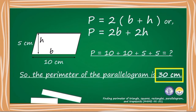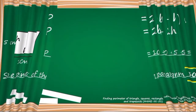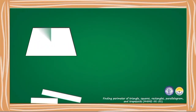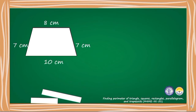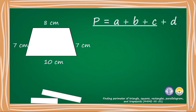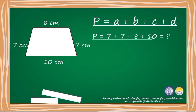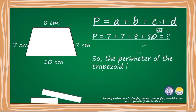This is a trapezoid which measures 7 centimeters, 7 centimeters, 8 centimeters, and 10 centimeters. The formula in finding the perimeter of a trapezoid is A plus B plus C plus D. P equals 7 plus 7 plus 8 plus 10. So the perimeter of a trapezoid is 32 centimeters.